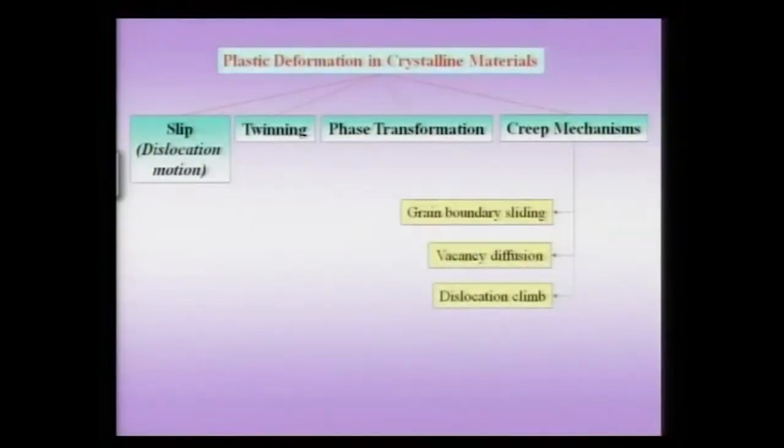We had mentioned that dislocations play a very important role in plasticity. Suppose I take a rod of copper and bend it — it bends easily — but a rod of steel is more difficult to bend. The kind of deformation that remains when the stress is removed is what we call plastic deformation. The primary agent responsible for plastic deformation in most cases is dislocation motion — the motion of a large number of dislocations — which is called plasticity by slip. However, we should not forget that there are other mechanisms of plastic deformation.